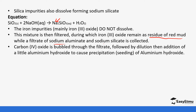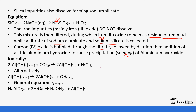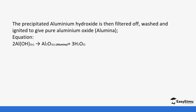Now we have sodium aluminate and sodium silicate in solution. To remove the sodium silicate, carbon dioxide is bubbled into the filtrate, followed by the addition of aluminium hydroxide — a process referred to as seeding. This is a precipitation where a pure form of the substance you want to precipitate is used. Carbon dioxide causes sodium aluminate to form solid aluminium hydroxide. Sodium aluminate reacts with water to form sodium hydroxide and aluminium hydroxide. Finally, the aluminium hydroxide is heated by ignition to give aluminium oxide and water, which is what we need for the next process.